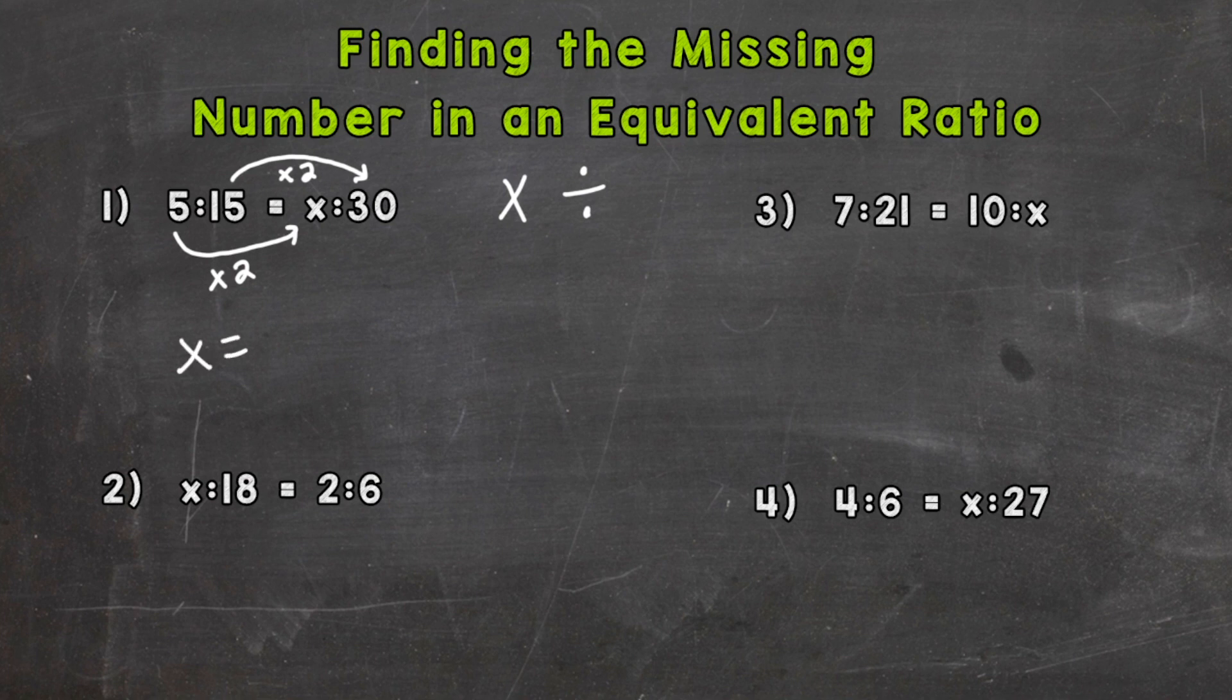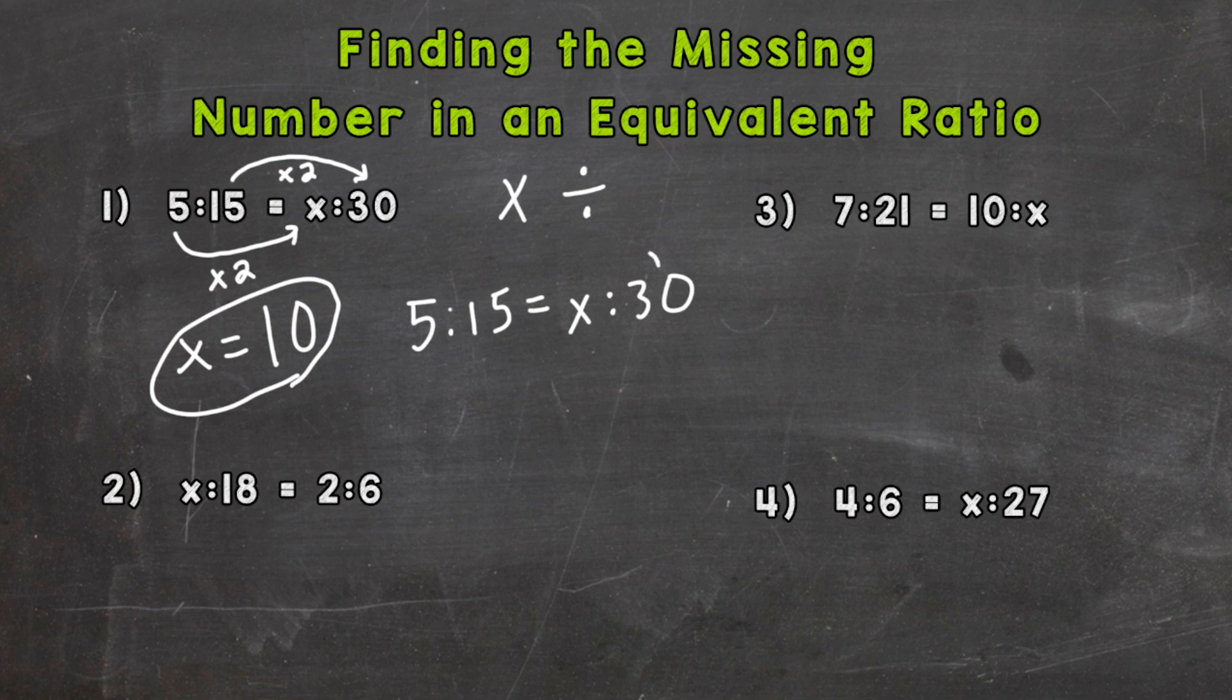I'm going to rewrite this ratio and show how we can use division as well. 5 to 15 equals x to 30. You can also go the opposite way, so you can think, how do I get 30 to equal that 15? Well, I can divide by 2. So what number can I divide by 2 to get 5? I know 10 divided by 2 gives me 5. We get the same answer either way.